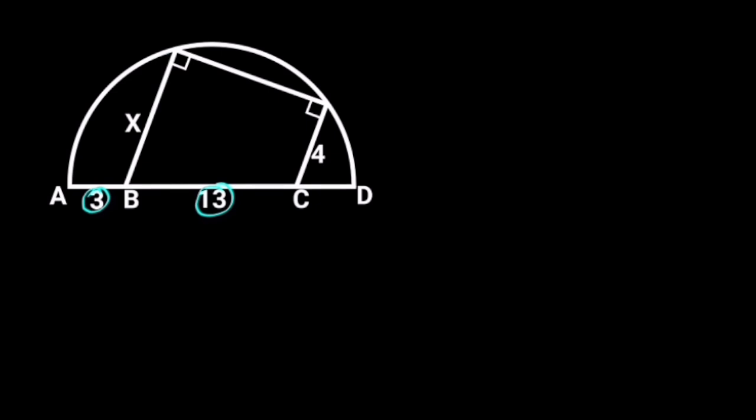Also, in the semicircle, the length of this line segment is given as X, and the length of this other line segment is given as 4 units.